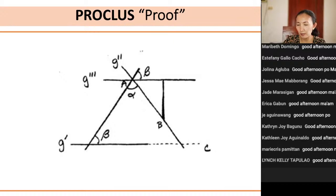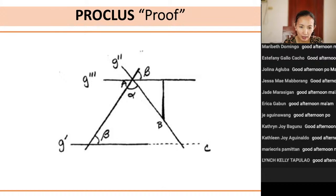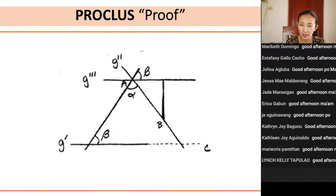Before discussing Proclus's proof, what do we really mean by parallel lines? Aside from lines that never meet — what is the other common notion about parallel lines? Parallel lines are lines that never intersect, lines that never meet. There is one more notion, and this is also where Proclus made his mistake. He made an assumption about this, but in no way was it discussed or mentioned in the book of Euclid or in the definition of a parallel line. What we know of parallel lines is they do not intersect, they do not meet.